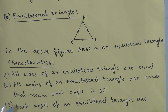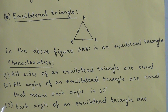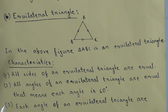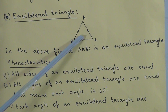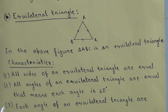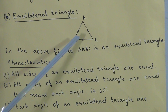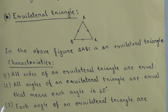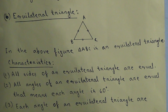The third characteristic: each angle of an equilateral triangle is an acute angle. We know that an angle whose measurement is less than 90 degrees is called an acute angle. Since all angles measure 60 degrees, all angles of an equilateral triangle are acute angles.